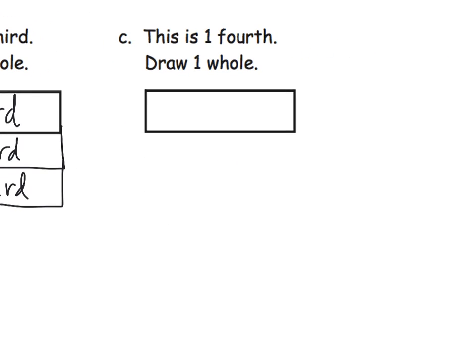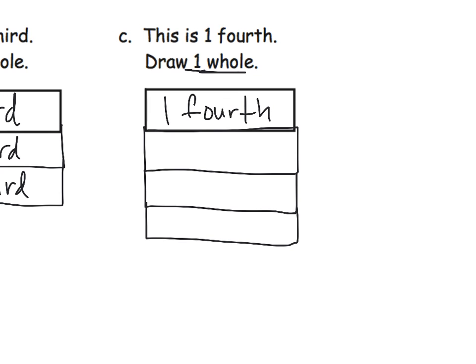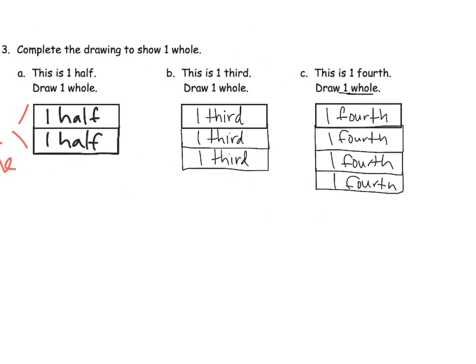And the last one is, if this little piece right there is one-fourth, then let's write that down. That's one-fourth. And if we want to draw one whole, that means we're going to need four of these. One, two, three, which means we need to draw three more. So this now is one whole, because you have four-fourths. And that makes one whole.